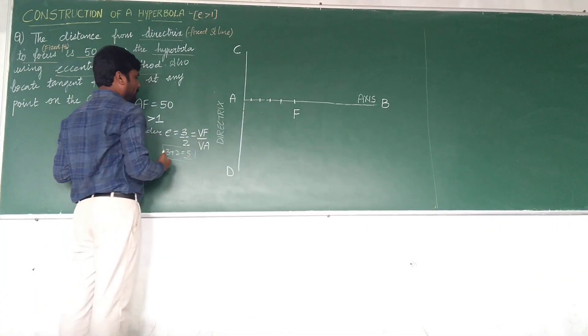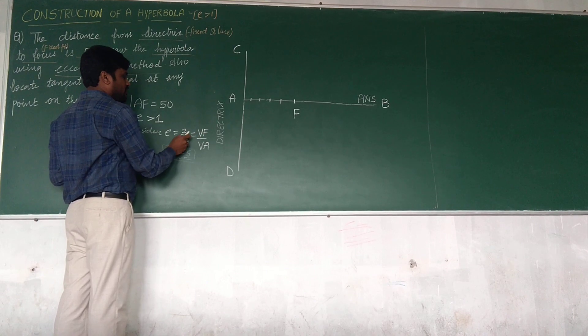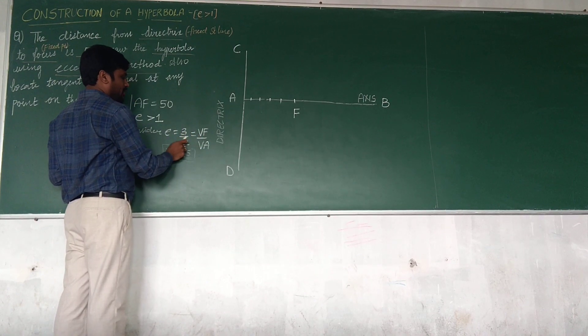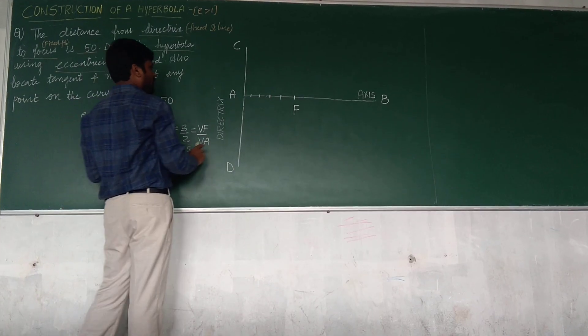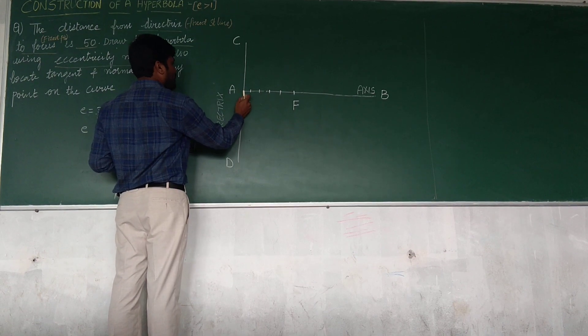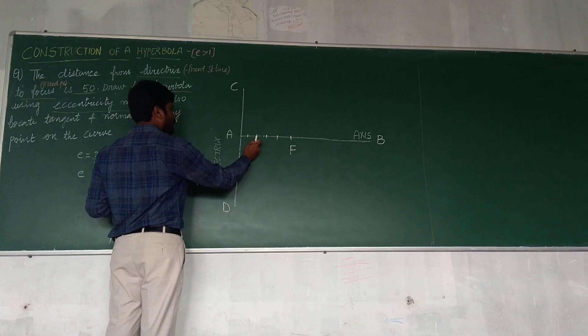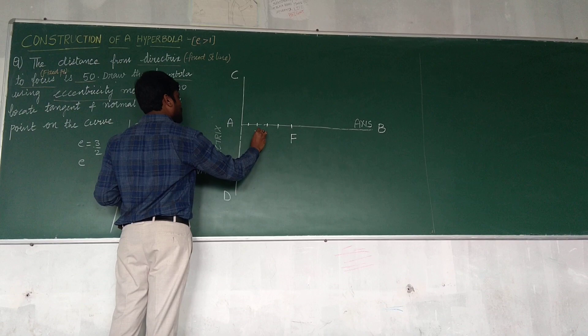So where I am going to locate the vertex? If you look, V to F is 3 divisions and V to A is 2 divisions. So if I look from here, A is 0, so 1, 2, so this is my vertex, second division.